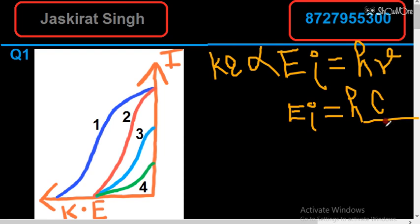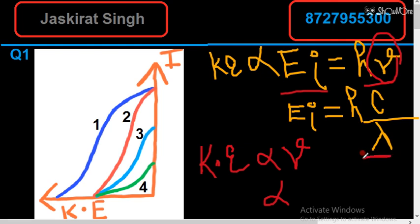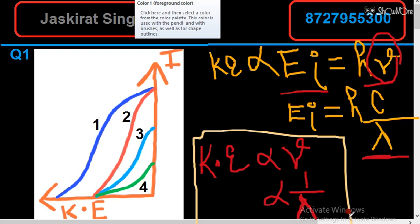Since h is constant, kinetic energy is directly proportional to incident frequency and inversely proportional to wavelength. This relation will be used in the first question. Please note down these two points: kinetic energy is directly proportional to incident frequency, and kinetic energy is inversely proportional to wavelength.